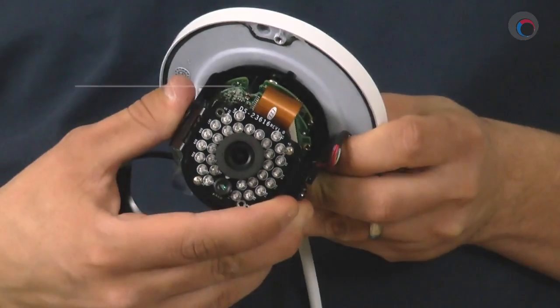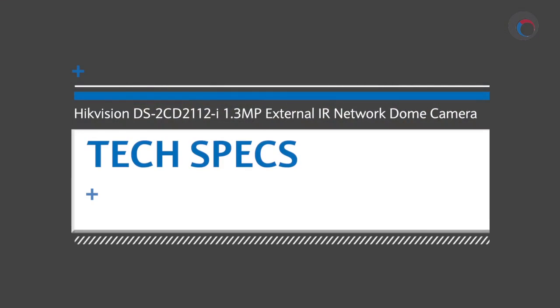That's it for the unit itself so now let's get techy. Hikvision's DS-2CD2112-I can stream up to 30 frames per second at a maximum resolution of 1.3 megapixels. It comes with a 6 millimeter lens on an M12 mount but you can also get an optional 2.8, 4, or 12 millimeter lens for this camera.